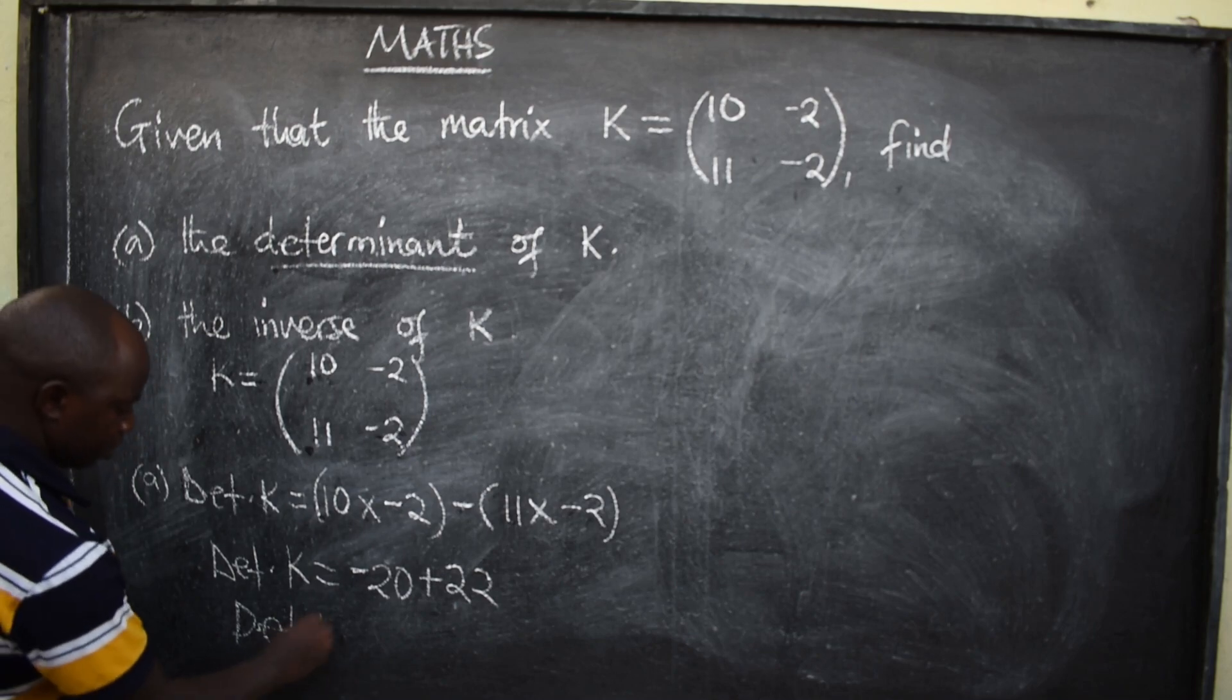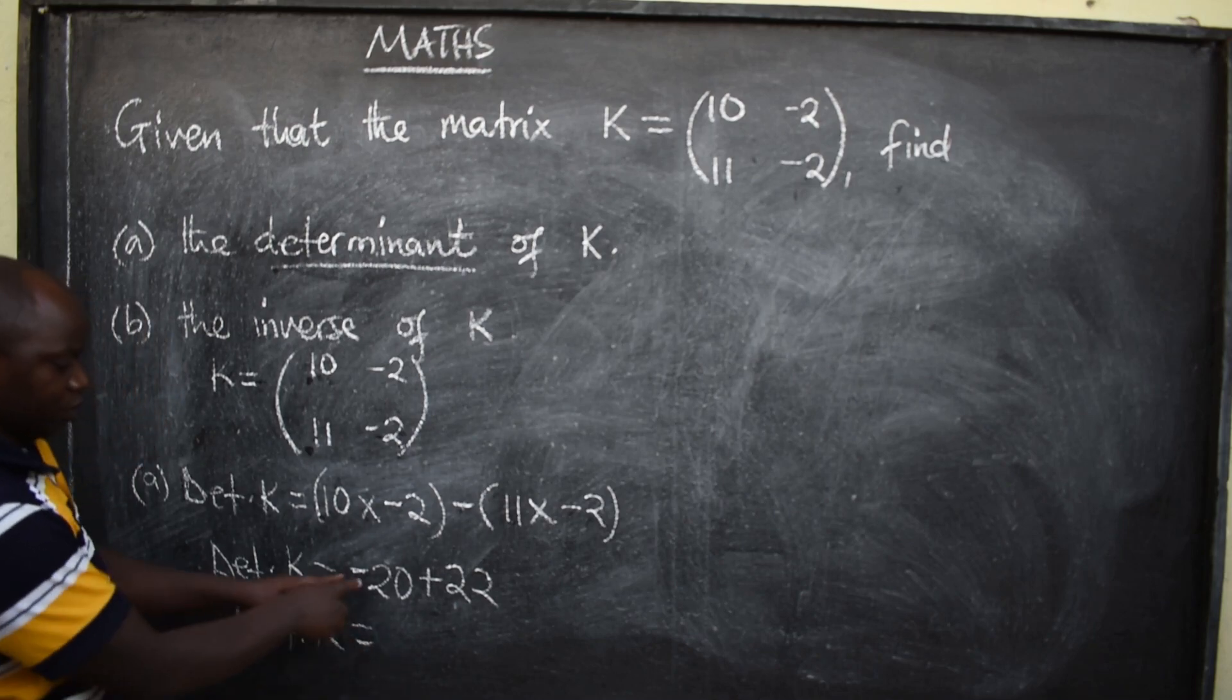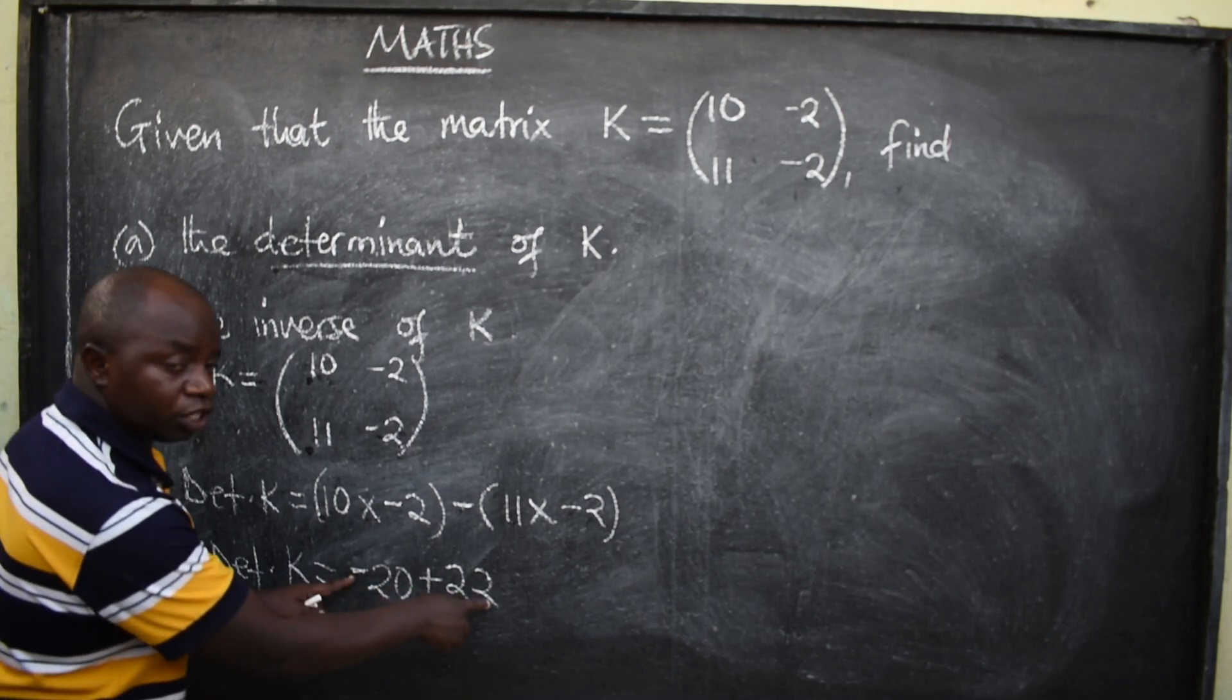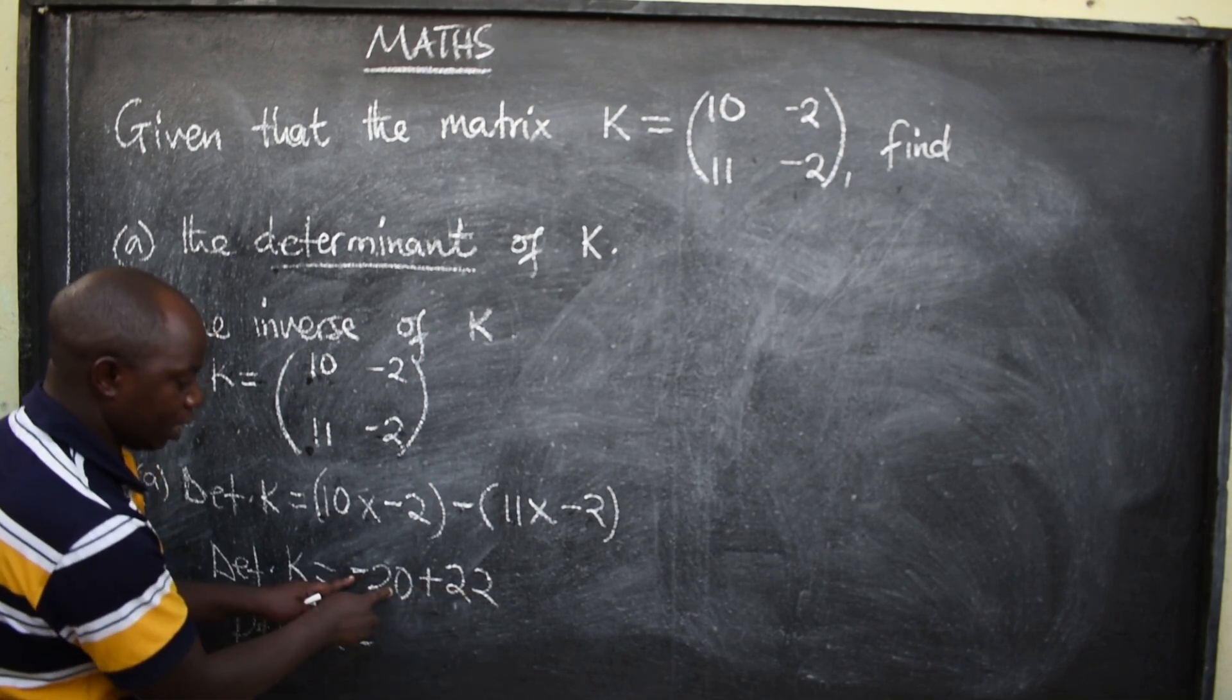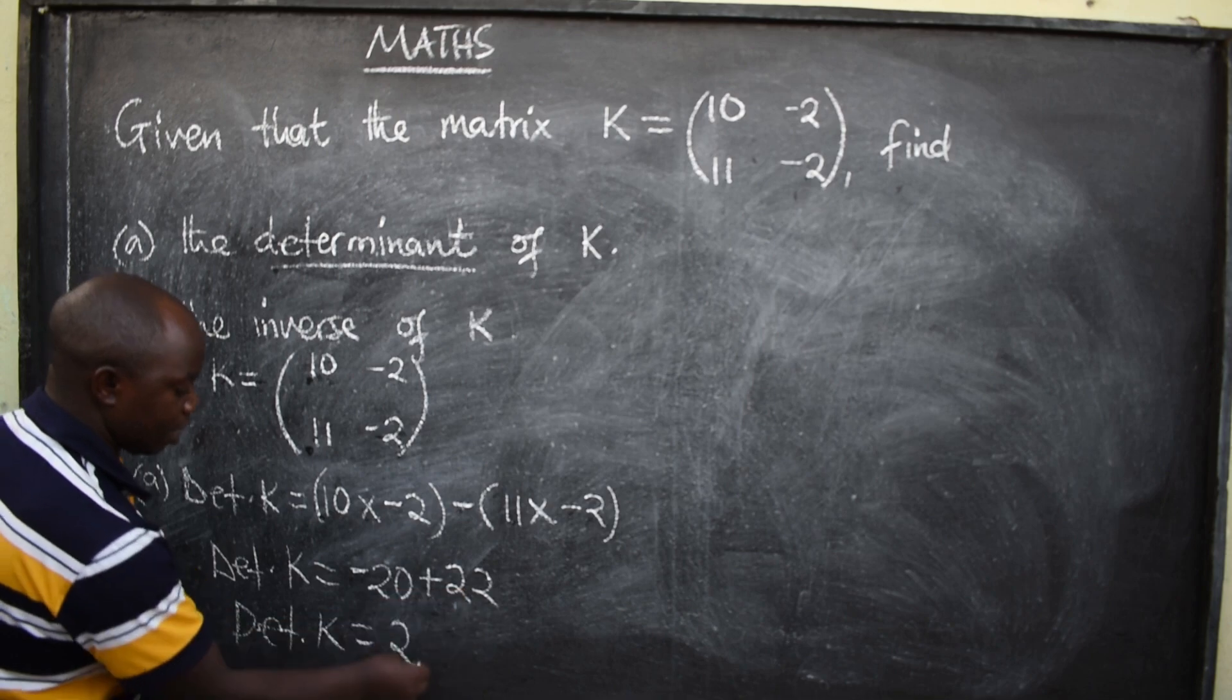Say, determinant of K is equal to negative 20, plus 22, different signs, you subtract. 22 minus 20 is 2. Get the sign from the bigger number.